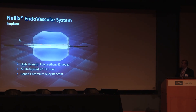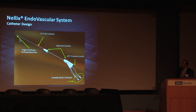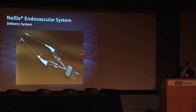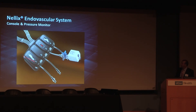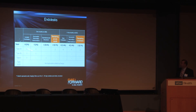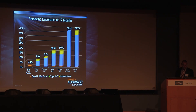The Nelix delivery system has the cobalt chromium stent covered with PTFE and the endobag that inflates with polymer. The two mirror-image catheters connect at the console, providing access to the endobag for aspiration, inflation of polymer, stent inflation, and angiograms. European registry data from over 250 real-world cases shows a very low endoleak rate — only one type 2 endoleak in over 250 patients. Type 1A endoleaks can occur due to folds in the endobag. At 12 months, European data shows less than 1% persistent endoleak rate compared to other IDE trials.